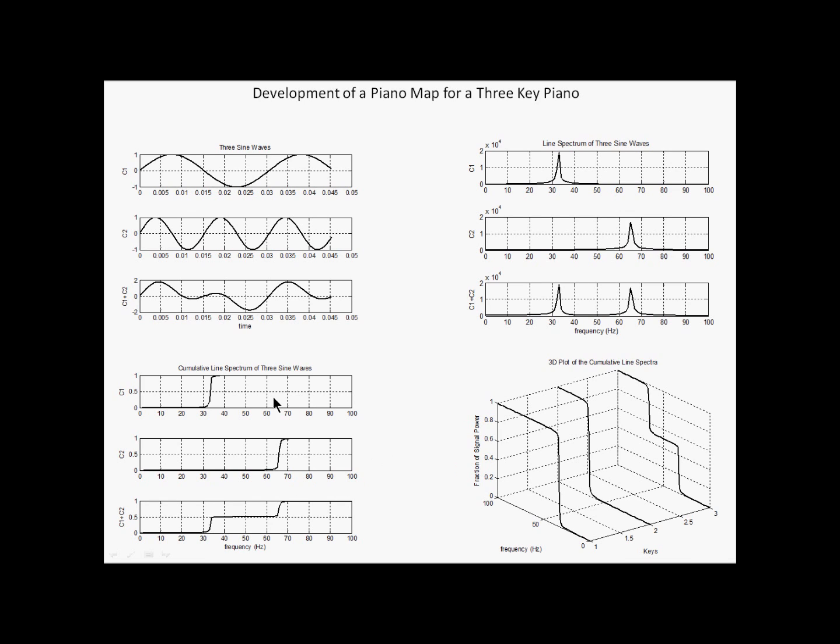Now I'm going to plot these three cumulative line spectra in 3D. Here's the keys going along this axis, here's the frequency along this axis, and here's the fraction of the total power. Here's the first key, comes up at 32.7, here's the second key, comes up at 65 hertz, here's the third key that comes up at 32 and then 65. Okay, we now should be able to look at a 3D cumulative line spectrum and perhaps understand it.